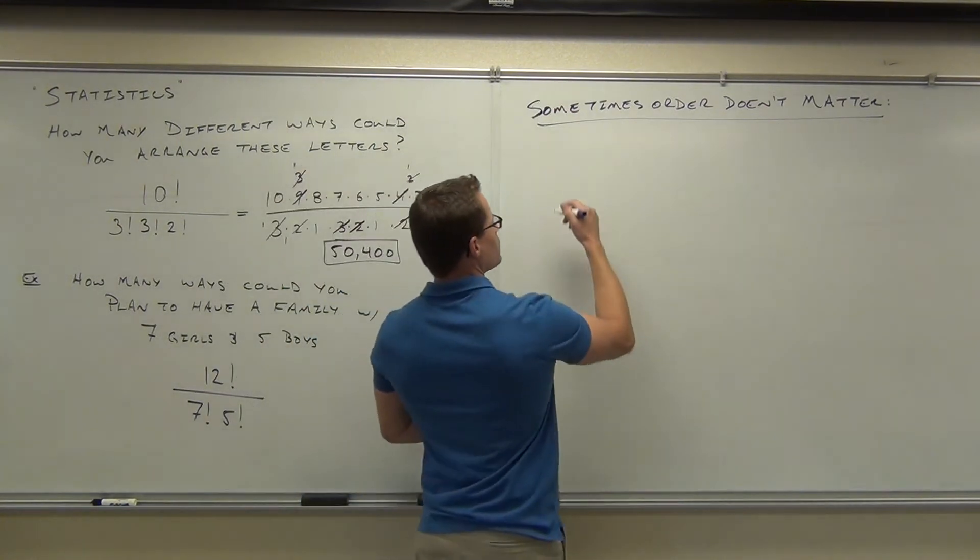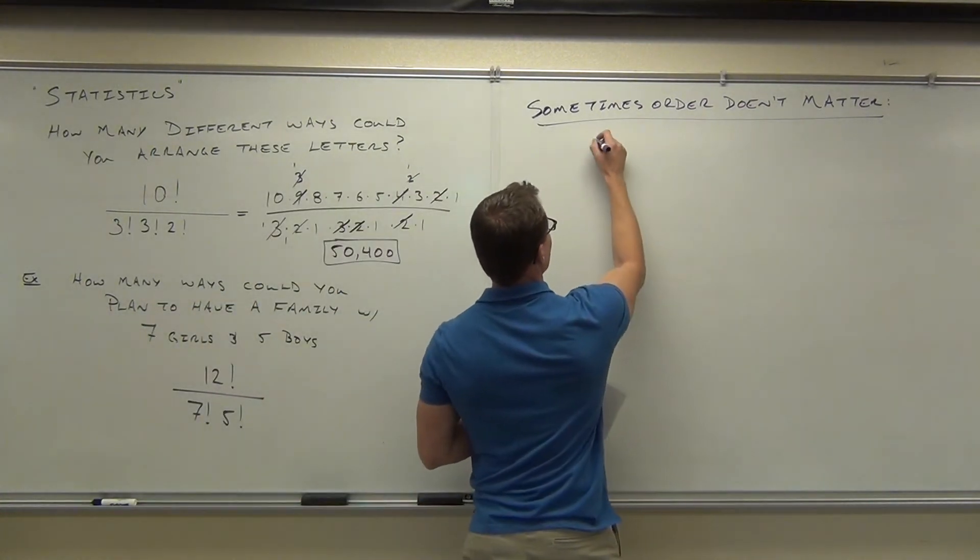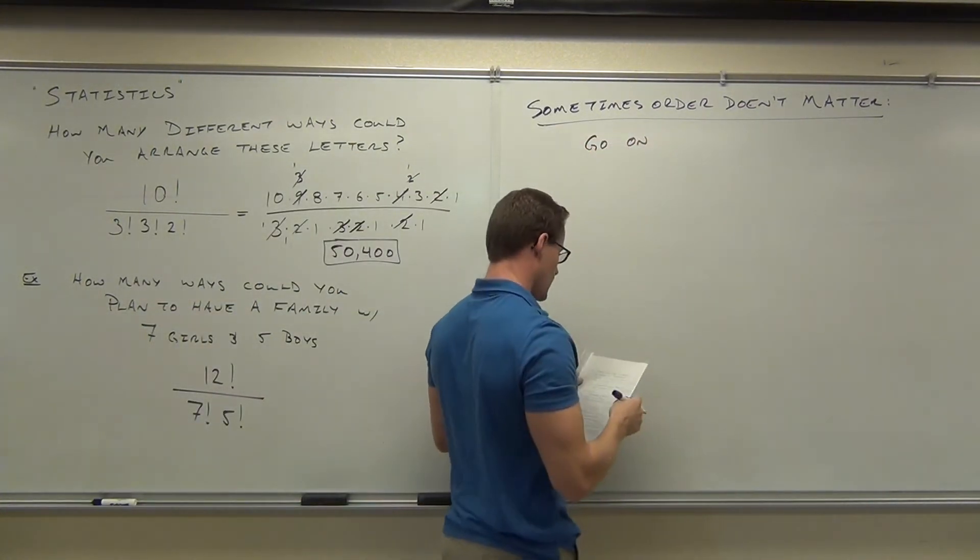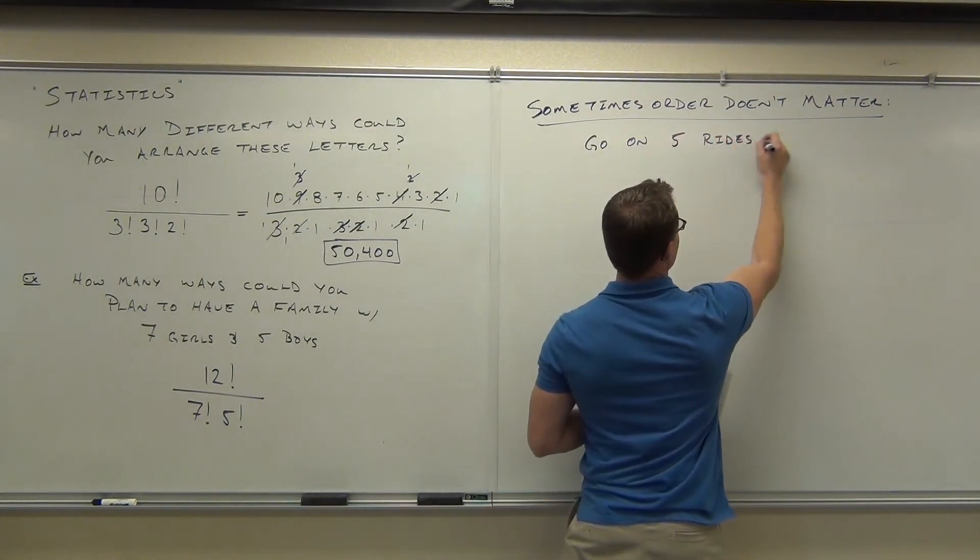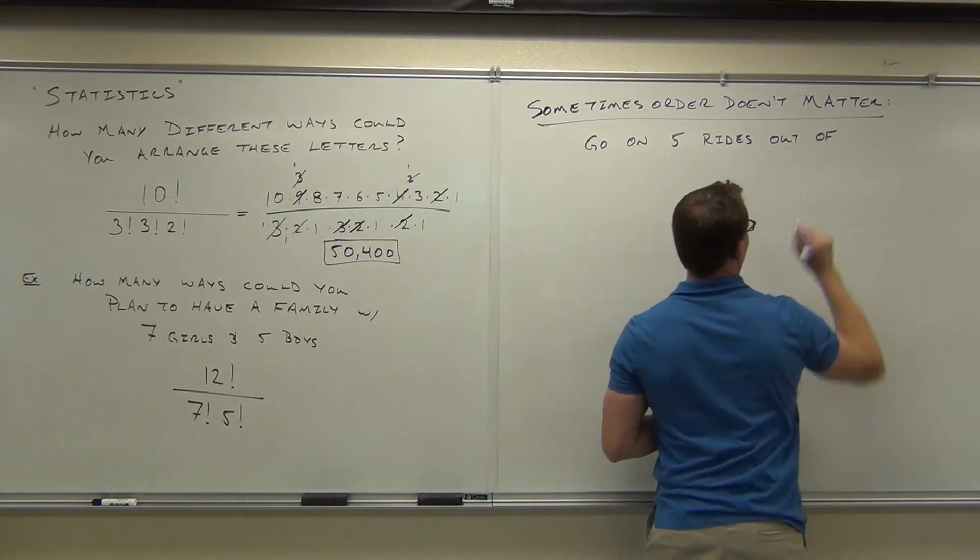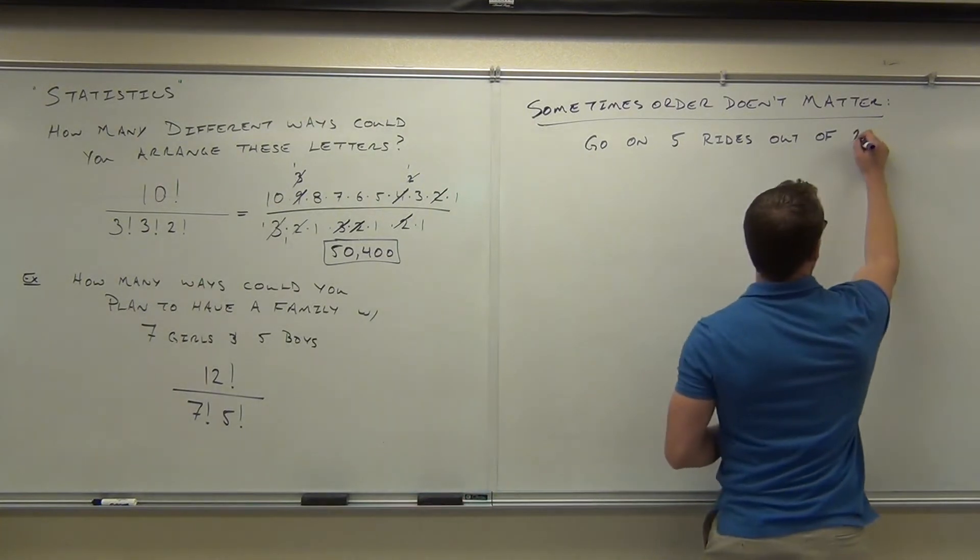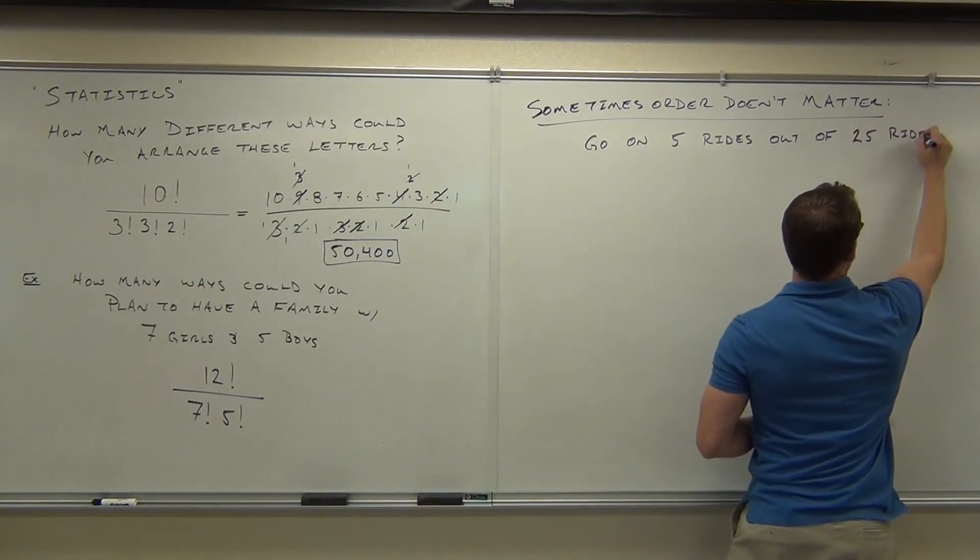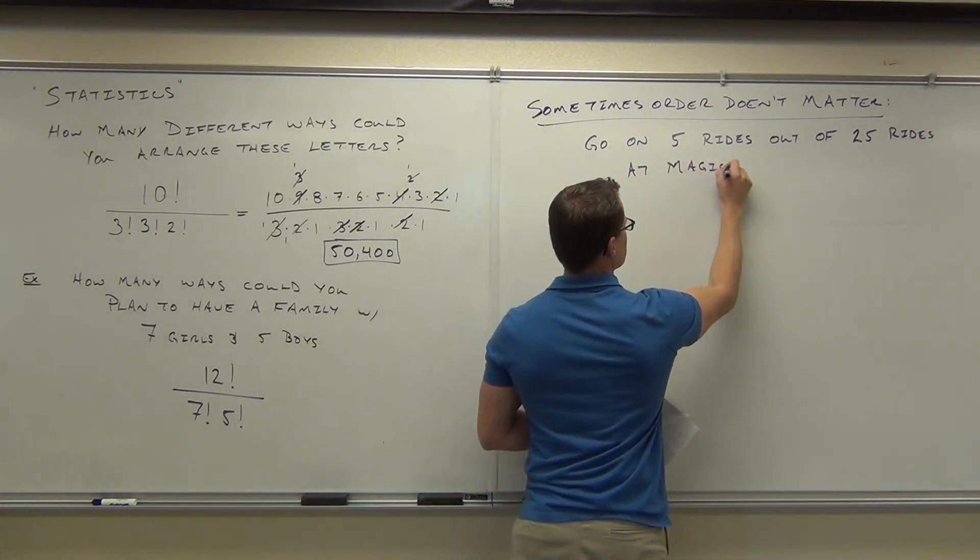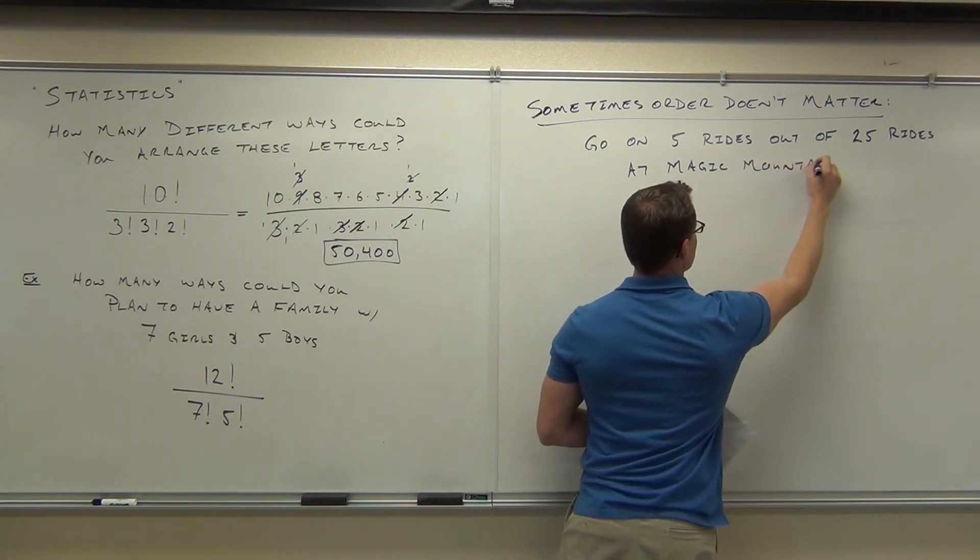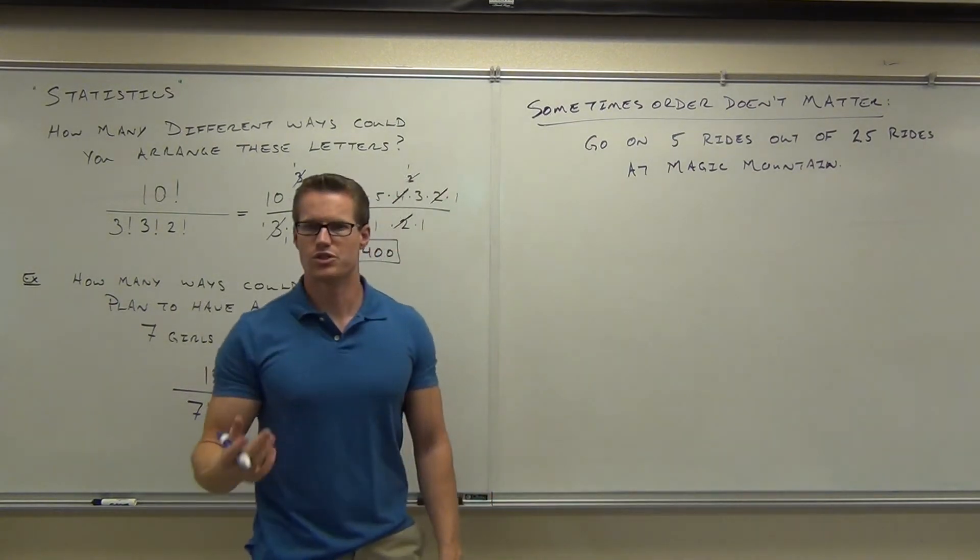So let's say that you want to go on five rides out of, I don't really think there's 52. Let's say there's like 25. Out of 25 rides at Magic Mountain. You don't care about the order on which you go on these rides.